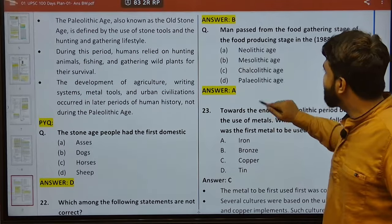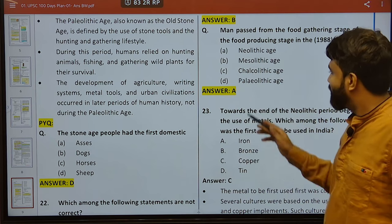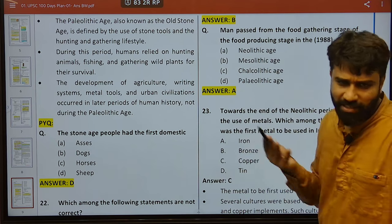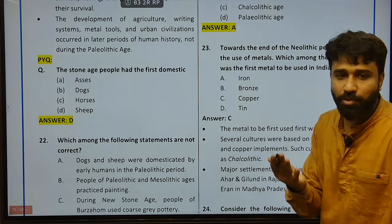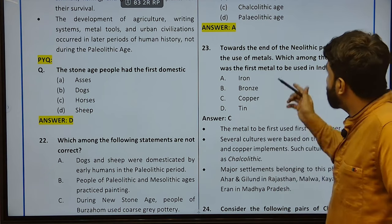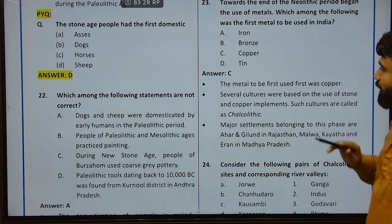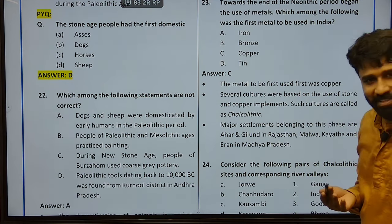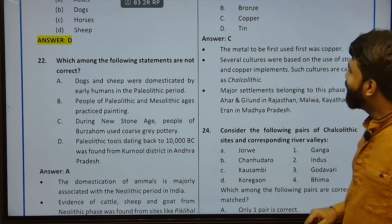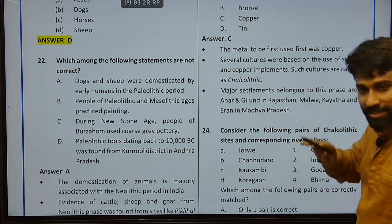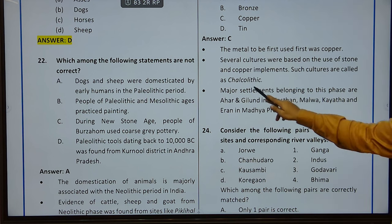Man passes from the food-gathering stage to food-producing stage in the Neolithic age. Towards the end of the Neolithic period, begin the use of metals — which among the following was the first metal to be used in India? The first metal to be used was copper. Several cultures that used stone and copper implements were called Chalcolithic. Without copper there is no Chalcolithic, because it is an alloy of copper. Major settlements belonging to this phase are Ahar and Gilund in Rajasthan, Malwa, Kayatha and Eran in Madhya Pradesh.